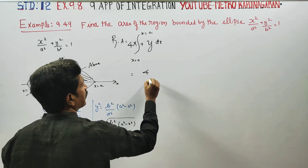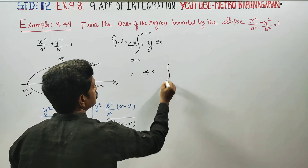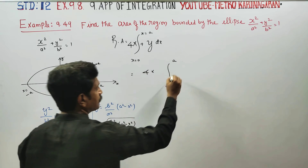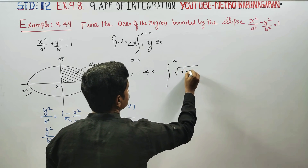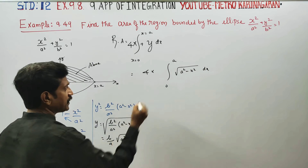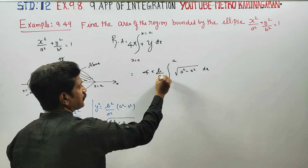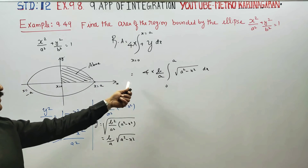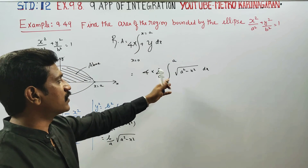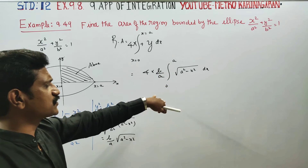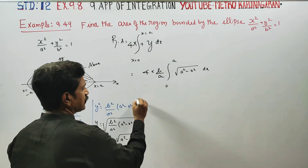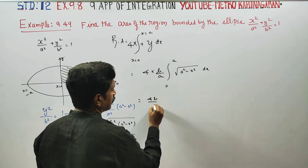The area is 4 times the integral from 0 to a of y dx, which is 4 times the integral from 0 to a of (b/a)√(a² − x²) dx. Since b/a is a constant, it can be taken outside the integration.